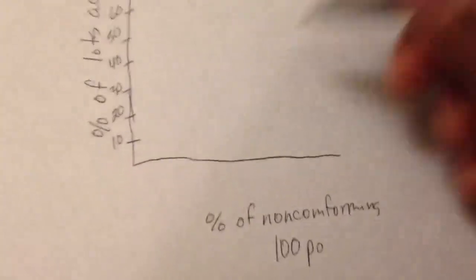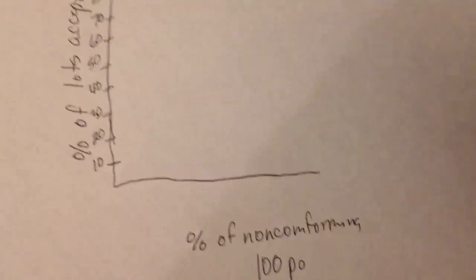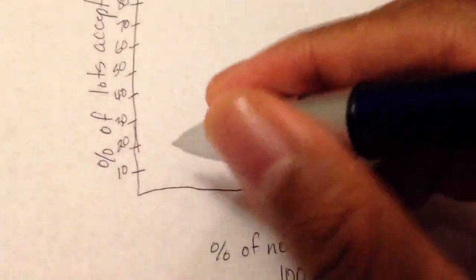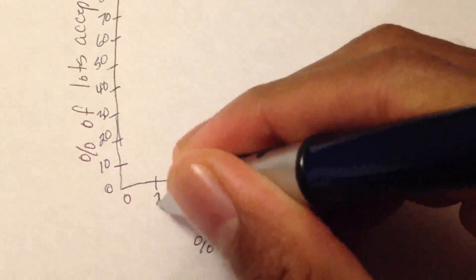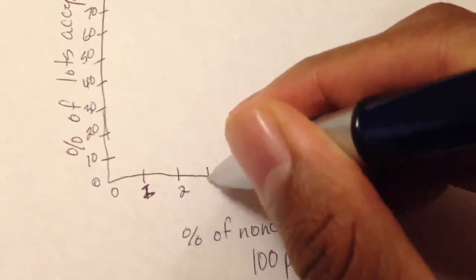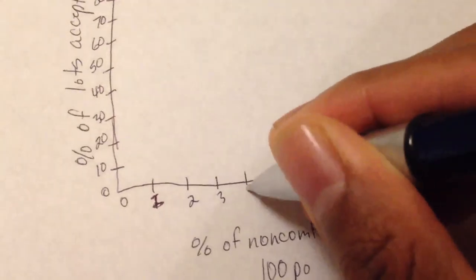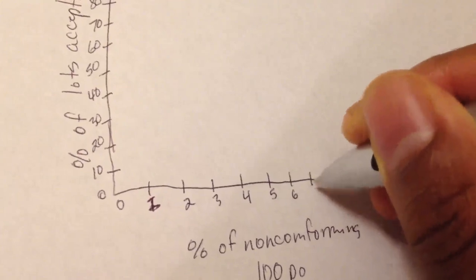Okay, on this axis right here you have your, as I said, percentage of non-conforming. Usually you want to go up to seven steps because anything above seven is really not necessary. One, two, three, four, five, six, seven.